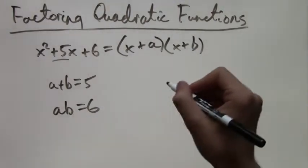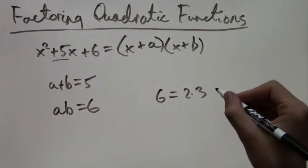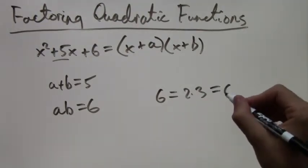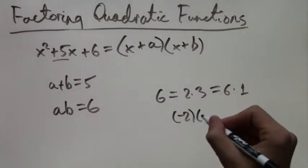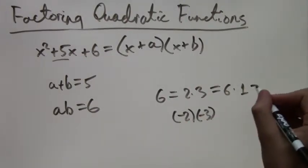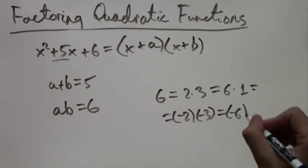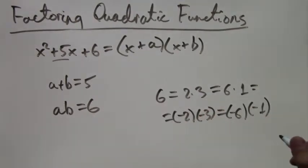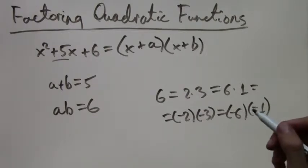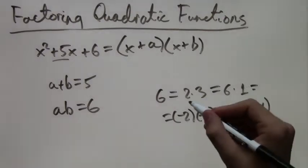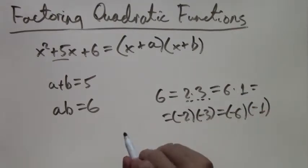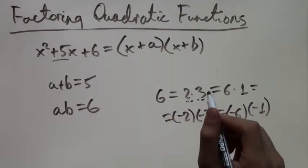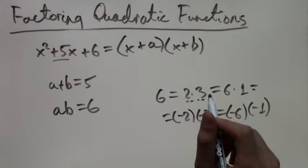Well, how can we factor 6? There's a few options really: 2 times 3, 6 times 1. You can also have negative 2 times negative 3 because the negative signs will cancel, or you can even have negative 6 times negative 1. But only one of these is actually going to work because we need the sum of these two multiples to equal 5. And that's 2 times 3. 2 times 3 is 6, and 2 plus 3 is 5. So we know that a equals 2 and b equals 3.